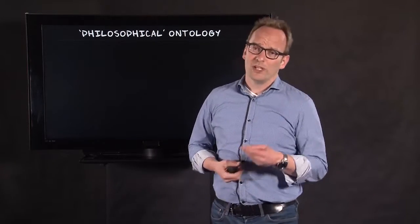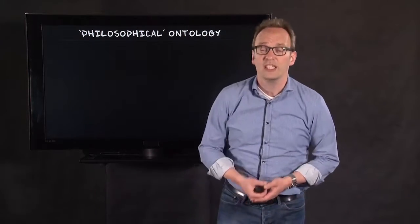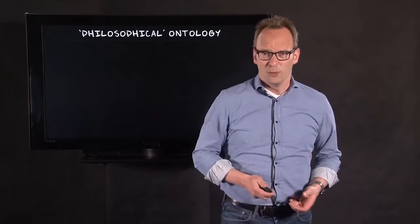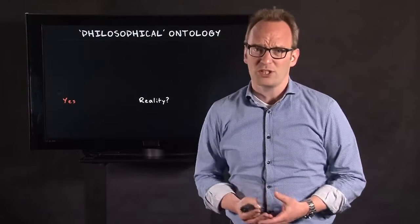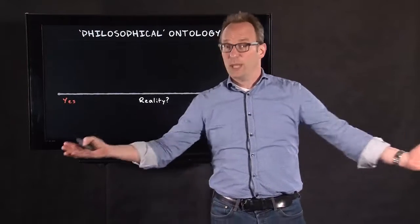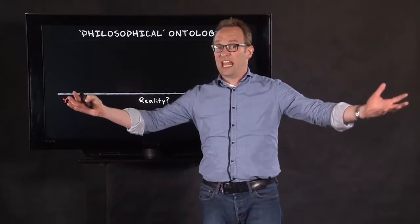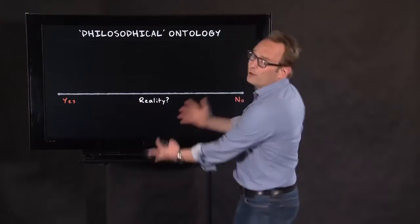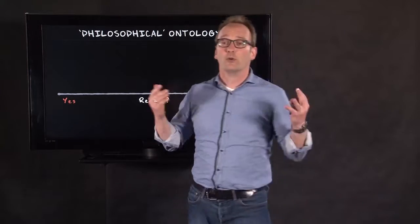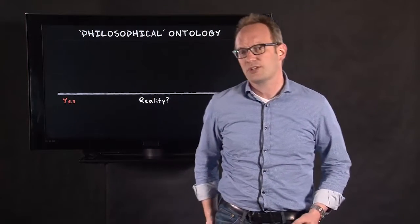When talking about ontology, I make a distinction between two types of ontology: philosophical ontology and social ontology. When talking about philosophical ontology, we talk about the state of being. Is there such a thing as being? Are we real? Is this screen for real? Is my face for real? So, that's philosophical ontology.